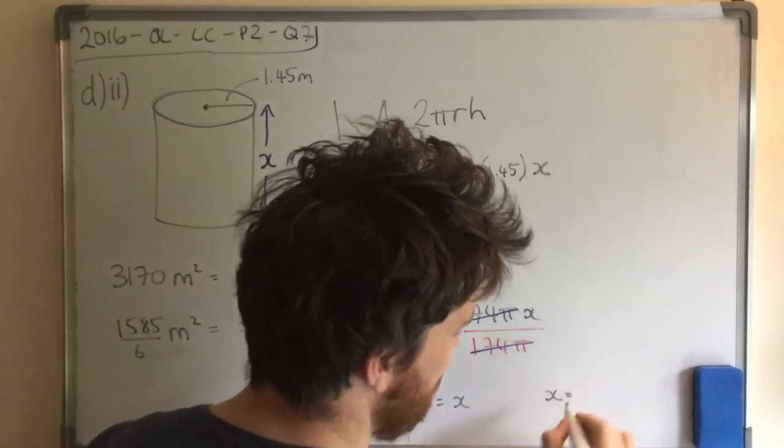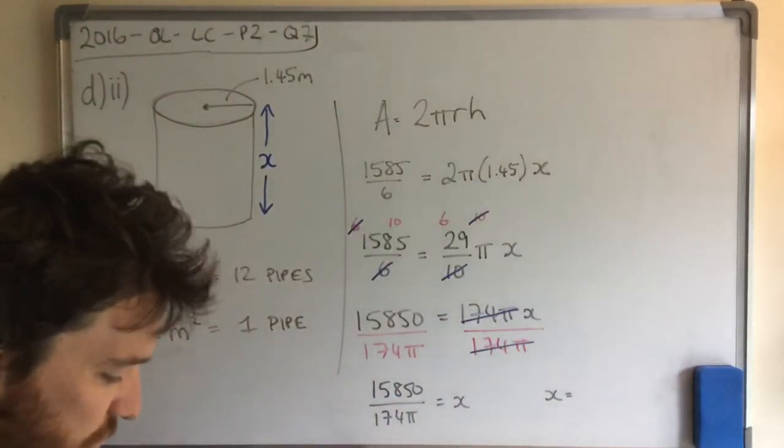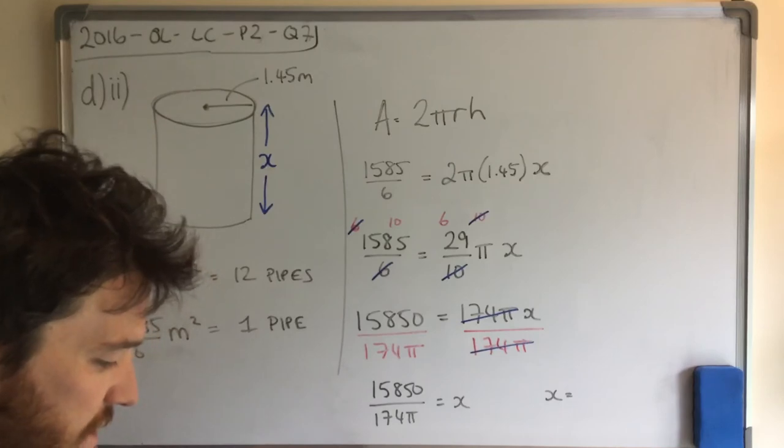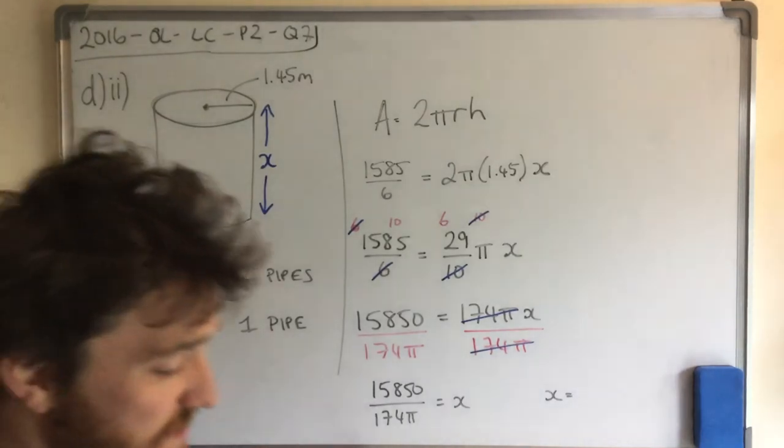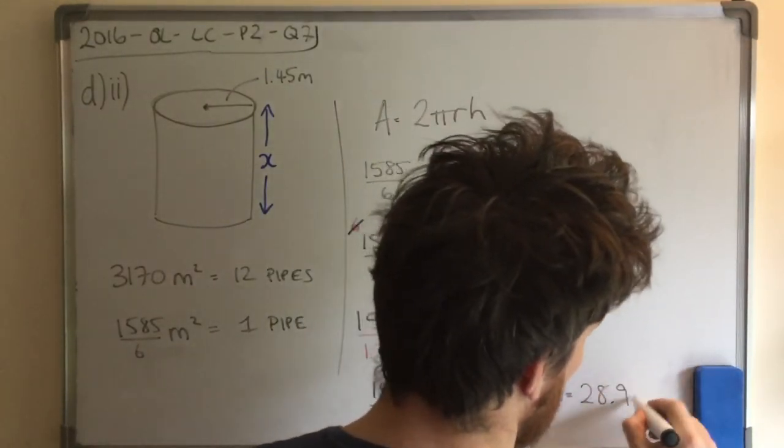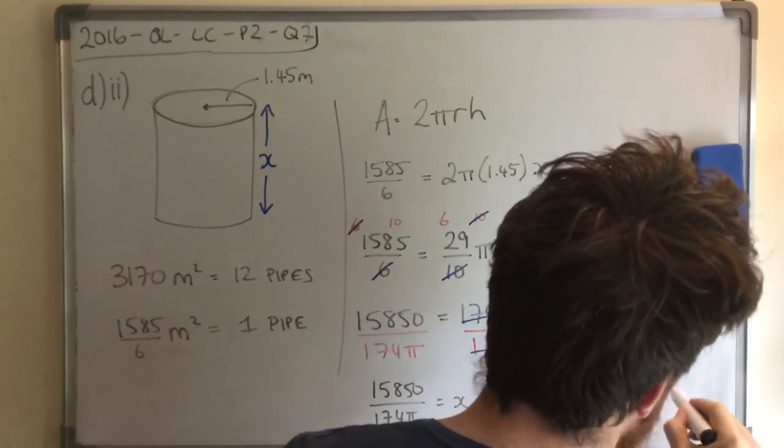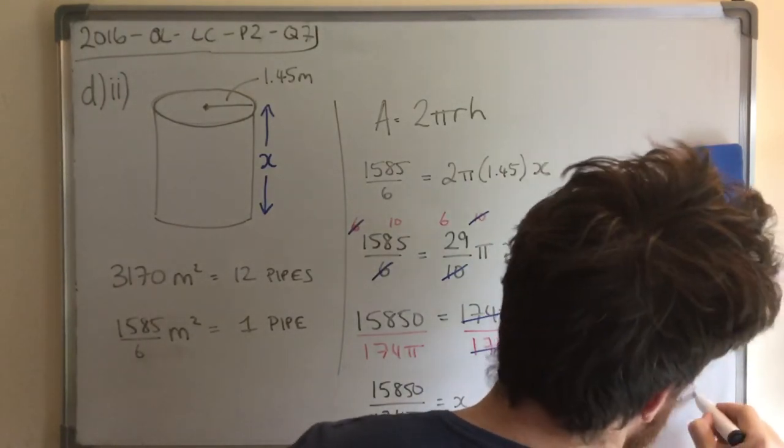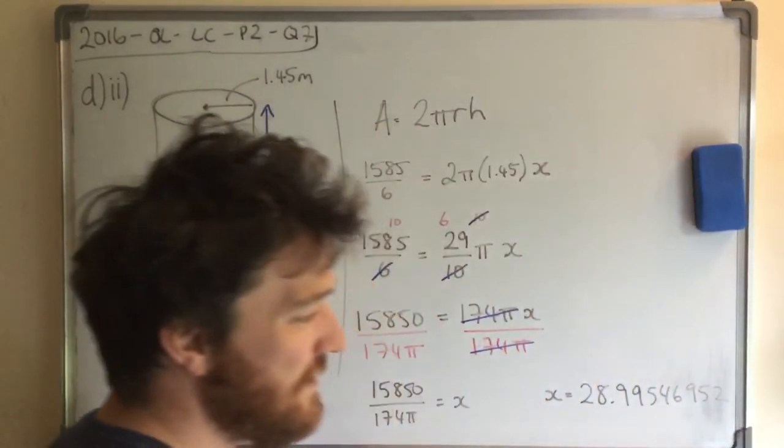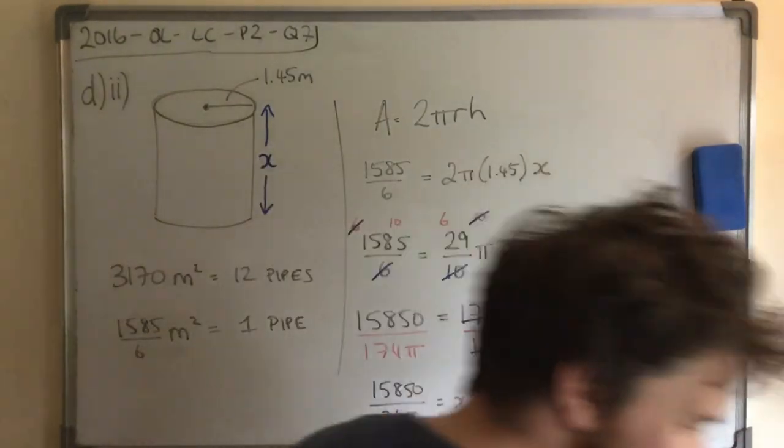So now I'm going to plug that in the calculator. And you can do it all in one at this point, 15850, all over 174π. Hit the... Boom. It gives me straight to a decimal. So it's told me it's 28.999... What? Nine. Nine. What? Five four... Six... Nine five two. Do you need to write out all the digits? No. Does it make a difference? Well, just go ahead and do it. Doesn't stress your life either.